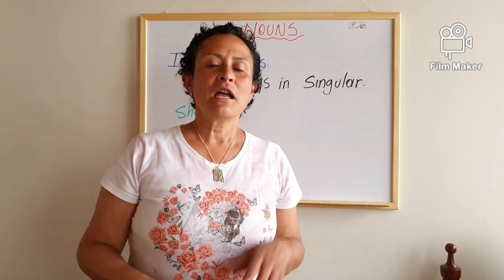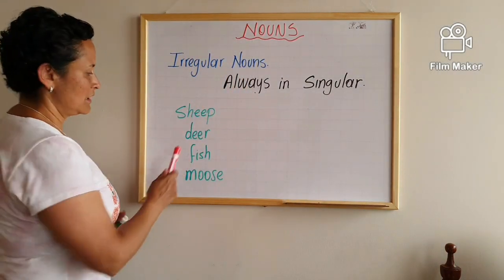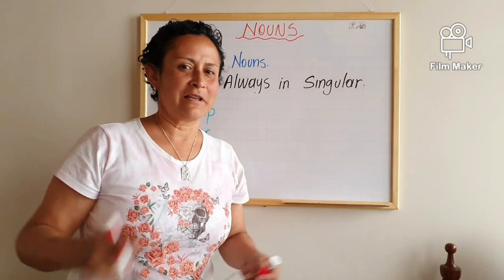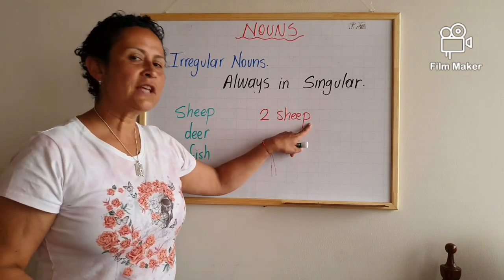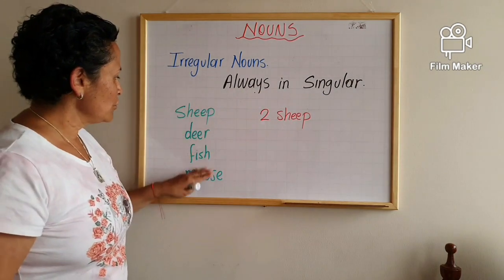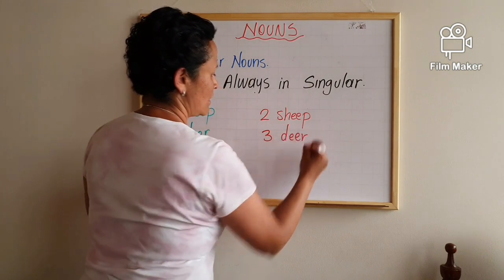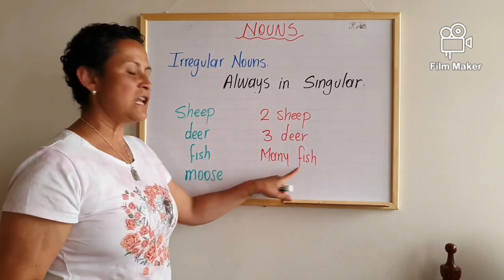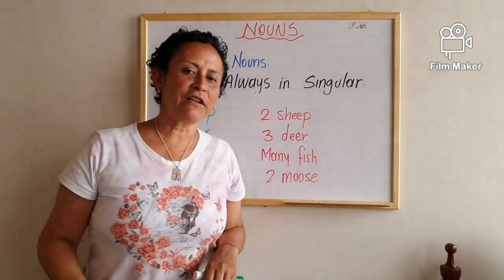The last group consists of nouns that stay the same in both singular and plural form. For example: sheep, deer, fish, and moose. So if you want to say many sheep, you don't add an S — it's two sheep, not two sheeps. Similarly, three deer, many fish — you don't say fishes — and two moose. These nouns do not change regardless of quantity.